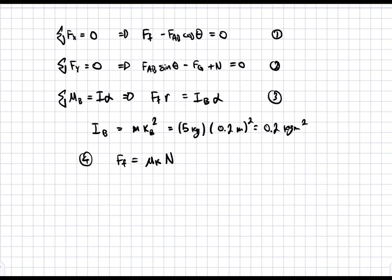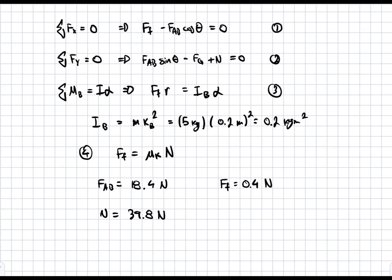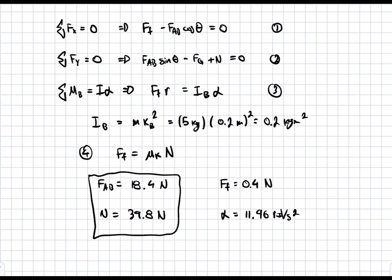Solving the system of equations yields the following results: FAB equals 18.4 Newtons, N equals 39.8 Newtons, force of friction equals 0.4 Newtons, and alpha equals 11.96 radians per second squared. The first two values — FAB and N — are part of the final answer for the reaction forces at the linkage and at the ground contact.